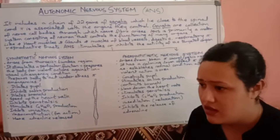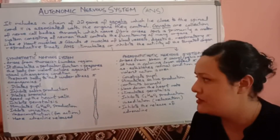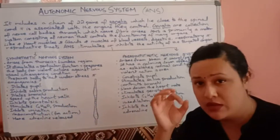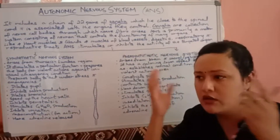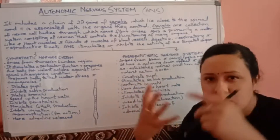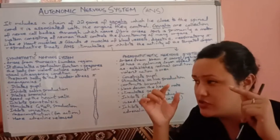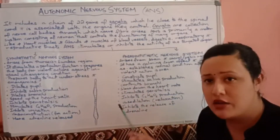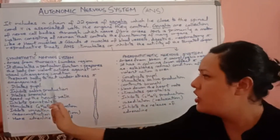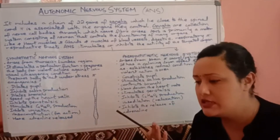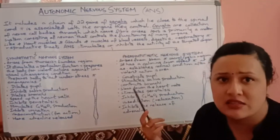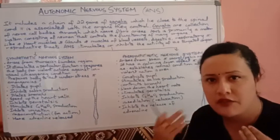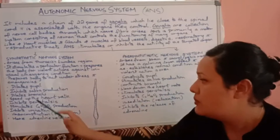Now let's compare the effects on specific organs. Take the eyes: under stress or emergency, the sympathetic system causes the pupil to dilate (enlarge), whereas the parasympathetic system constricts the pupil back to normal. For the salivary gland: when scared, your mouth goes dry — the sympathetic system inhibits saliva production, while the parasympathetic system stimulates saliva production. For the bronchi: the sympathetic system causes dilation, and the parasympathetic system causes constriction back to the original position.